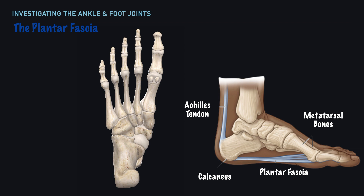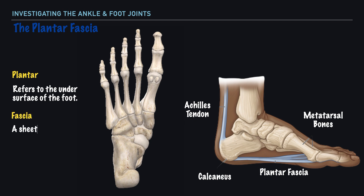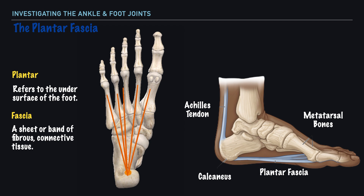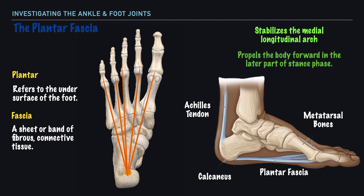An additional structure to note is the plantar fascia. The term 'plantar' refers to the undersurface of the foot, and on this undersurface we have a fascia — a sheet or band of fibrous connective tissue. The plantar fascia extends from the calcaneus to the proximal phalanges of the toes, and its function is in stabilizing the medial longitudinal arch and propelling the body forward in the latter part of the stance phase.